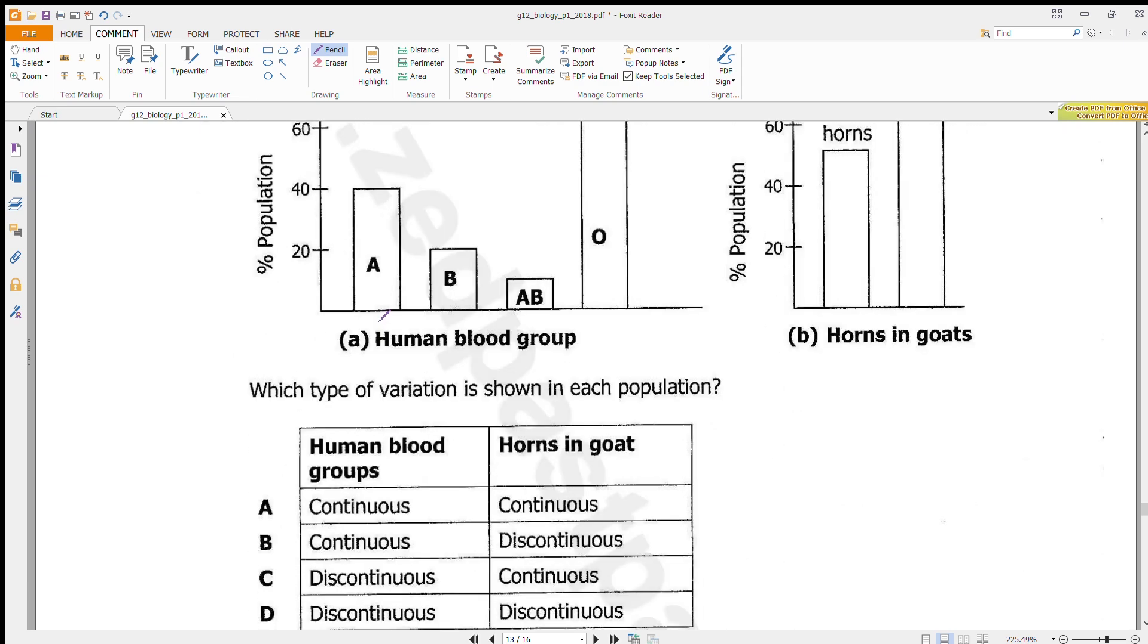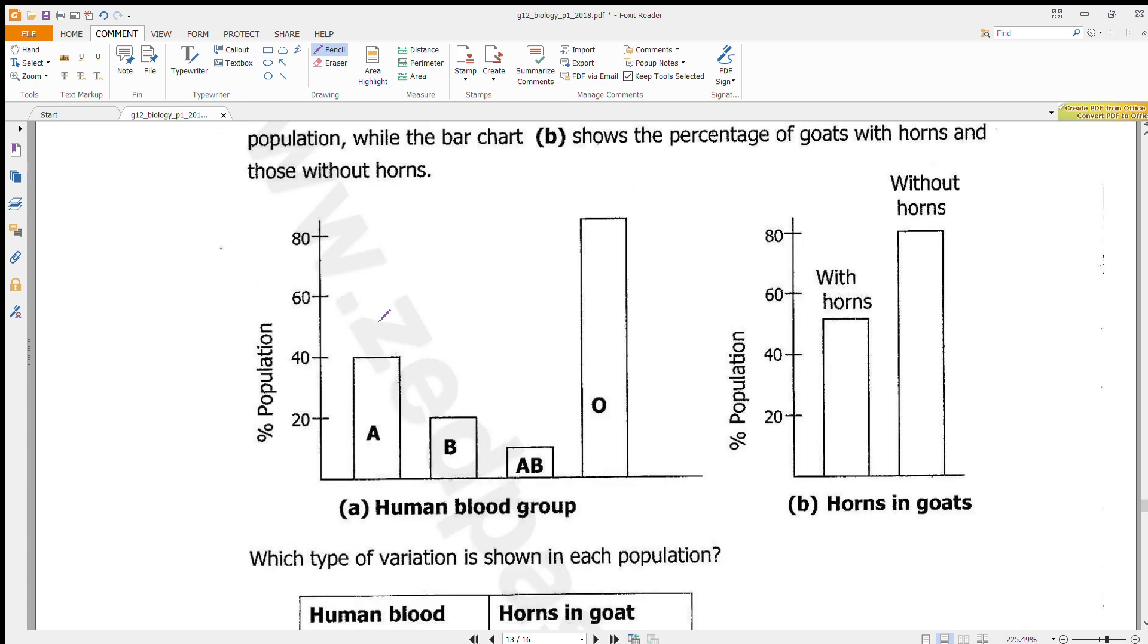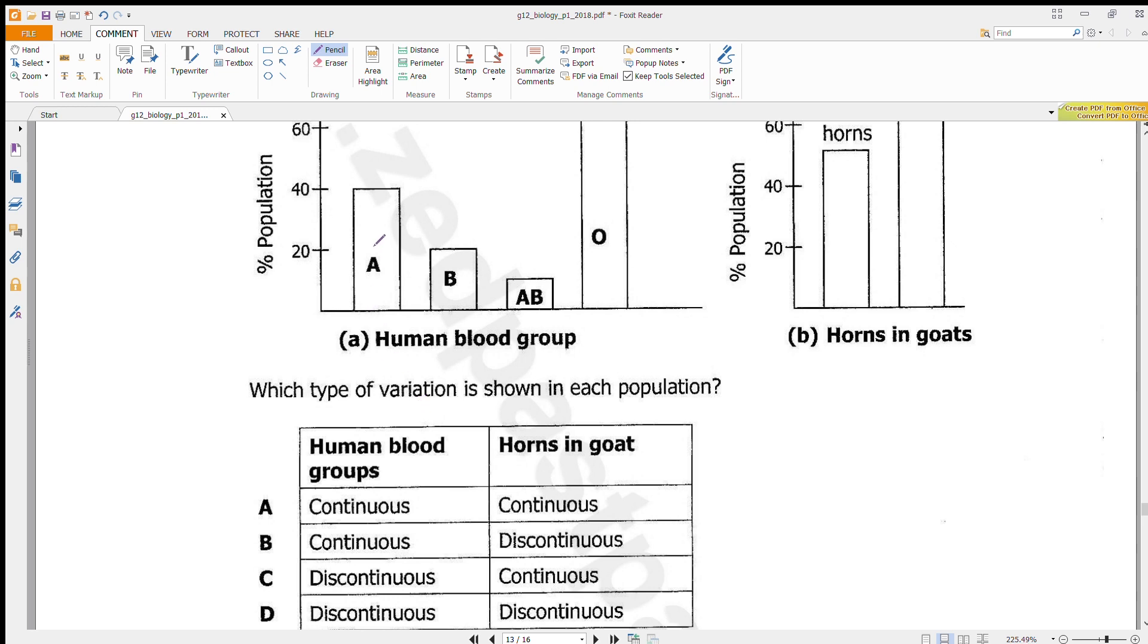Which type of variation is shown in each population? We know there are just two types of variation: continuous and discontinuous. This is discontinuous variation and this is also discontinuous variation. In discontinuous variation there is a clear cut difference. There is A, there is B, there is AB, there is O. For continuous variation, the graph looks like this—it is continuous. There is no breaking of this line here. Our answer is discontinuous, discontinuous, which is D.